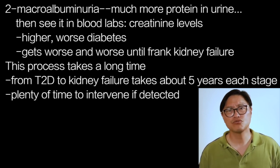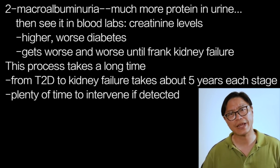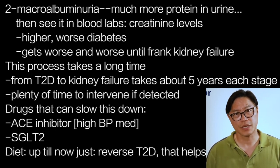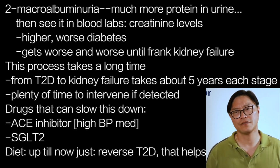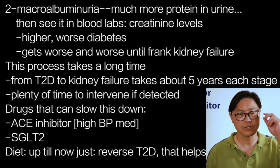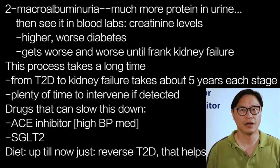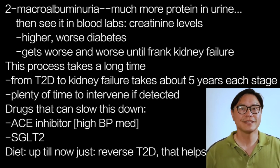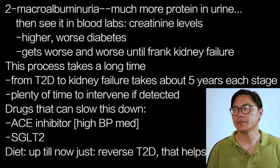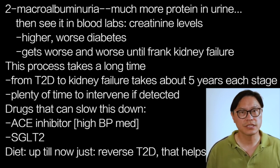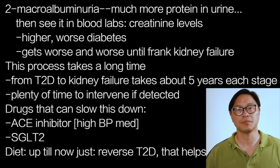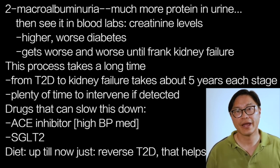However, there are only a few drugs that have been proven to slow down this progression. There's a drug called an ACE inhibitor or an angiotensin receptor blocker, which is a type of high blood pressure medication, and there's another medication called an SGLT-2. These certainly have their use in the treatment of diabetic nephropathy. Diet is also very important, but up until now there really hadn't been any trials. The best we could say was that if you could use diet to reverse your type 2 diabetes, then it's likely you're not going to develop worsening diabetic kidney disease because you don't have the diabetes.